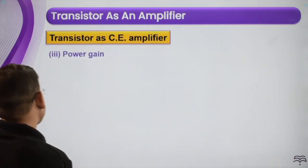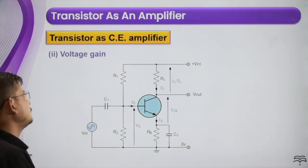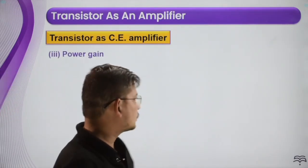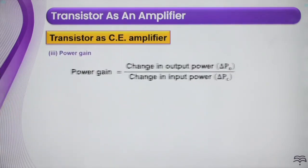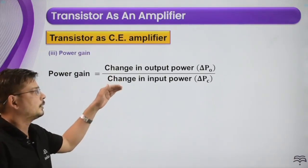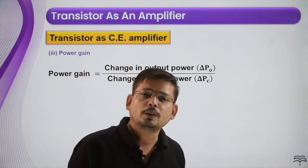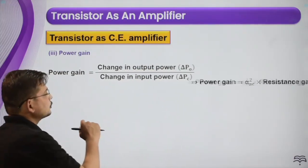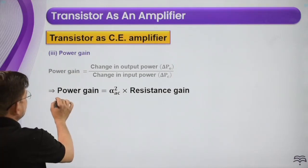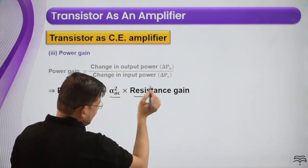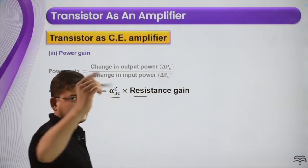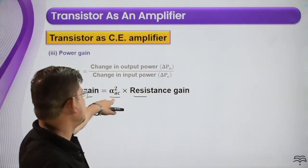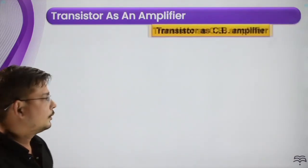Now we talk about power gain. Power gain is the change in output power divided by the change in input power. Using Joule's law (P = I²R), the power gain can be given as alpha AC squared multiplied by the resistance gain.